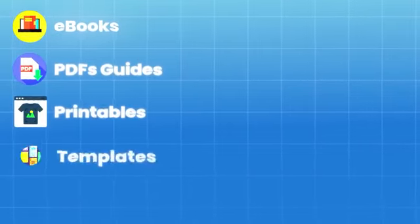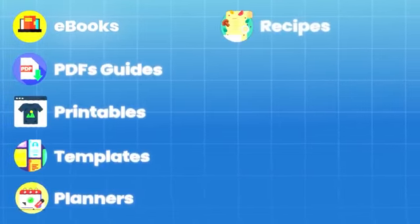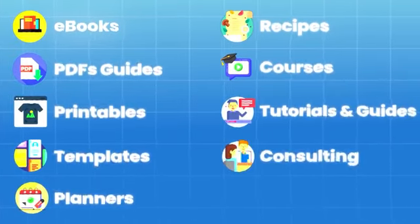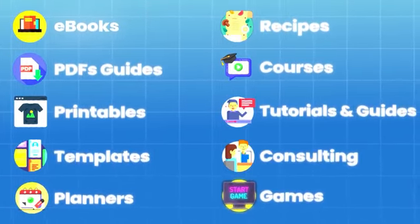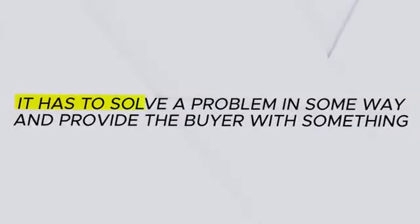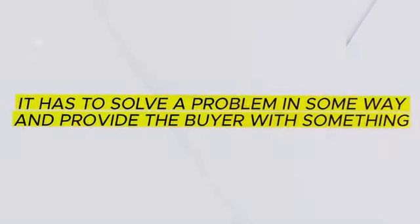There are many different types of digital products you can sell: ebooks, PDF guides, printables, templates, planners, recipes, courses, tutorials, guides, consulting, games, and so much more. Remember that your digital product has to have value — it has to solve a problem in some way and provide the buyer with something.